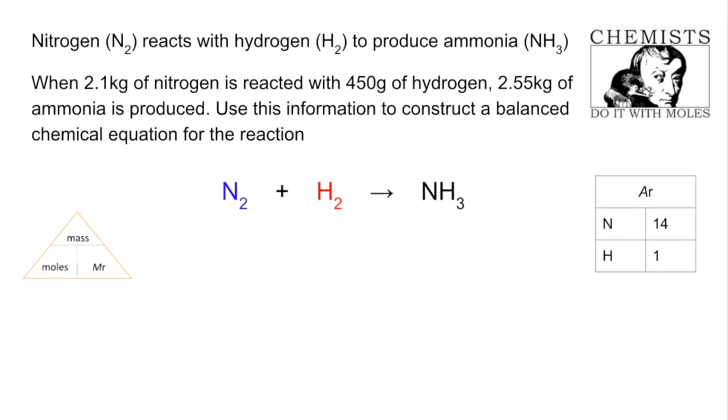Just as before we're going to write down the unbalanced equation and again I've color coded the chemicals involved. So the first thing now is masses. We're given all the masses but the catch in this one was the fact that a couple of those masses were given in kilograms. So we've got to convert that to grams first.